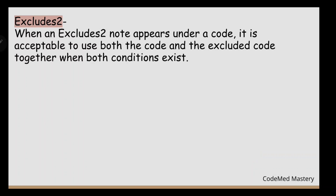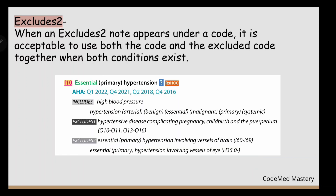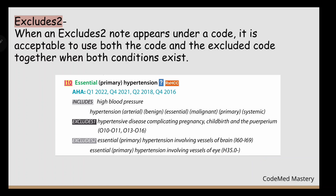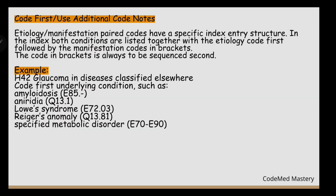Next is Excludes 2. When an Excludes 2 note appears under a code, it is acceptable to use both the code and the excluded code together when both conditions exist. For example, under I10 (Essential Primary Hypertension), the Excludes 2 note lists essential primary hypertension involving vessels of the eye. If the patient has both systemic hypertension and primary hypertension of the eye, it is appropriate to assign codes for both conditions.